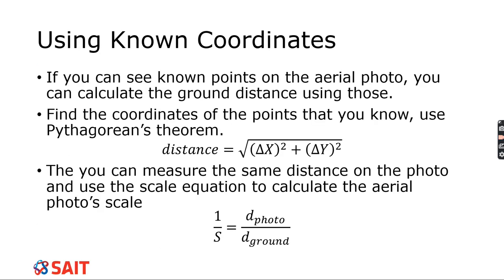If we know coordinates on the ground and we can see them in the aerial photo, that's what you need to do this version. If you've gone out with a GPS unit and acquired points that you know where they are and can see them on the aerial photo, you can use those points to calculate a distance. You take the eastings and northings, both usually in meters, and use Pythagorean's theorem to calculate the distance. Distance rather than coordinates is best when looking at two places with respect to each other, and it allows us to calculate the scale of the aerial photo.